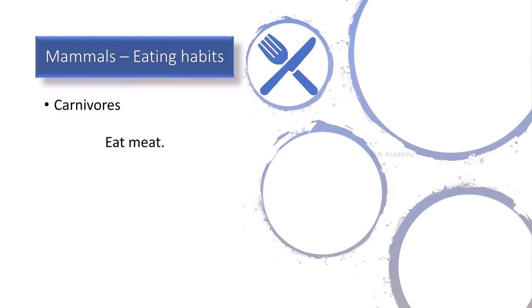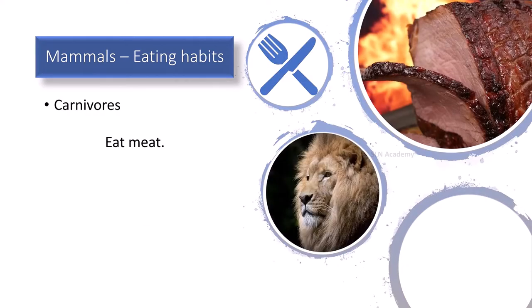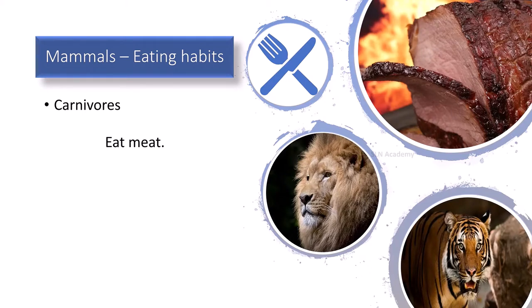Meat-eating mammals are called carnivores. Most of them hunt for food. They have sharp pointed teeth to catch and tear their food. Examples: lions, tigers, etc.